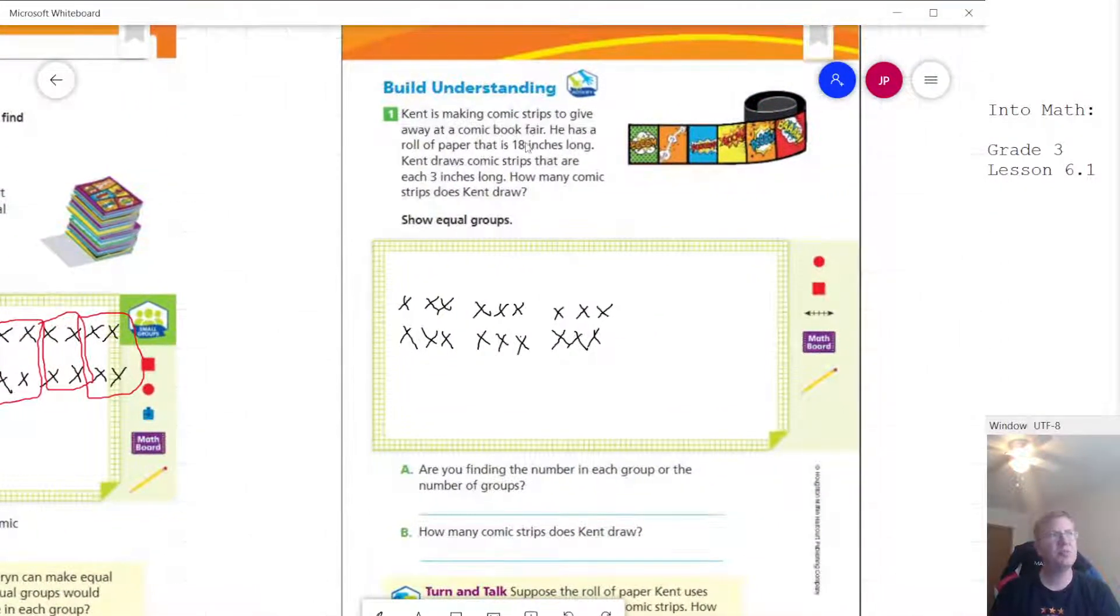Another example: Kent is making comic strips to give away at a comic fair, and he has a roll of paper that is 18 inches long. He's drawing comic strips that are each 3 inches long. I would recommend to students that the second number is going to be the size in each group, so we're going to make groups of comic strips that are each 3 inches long.